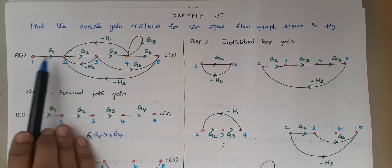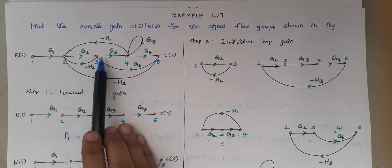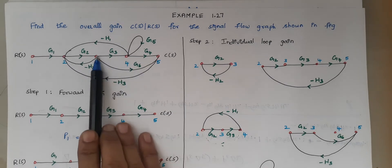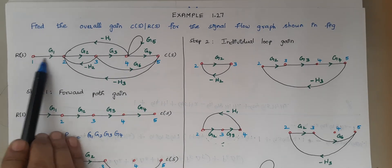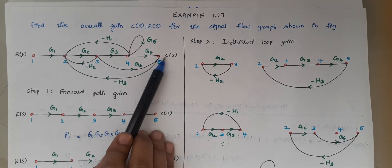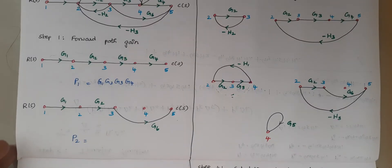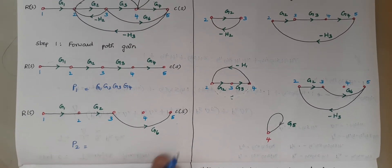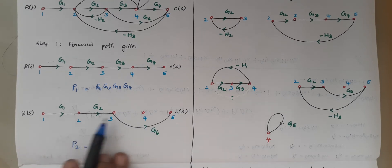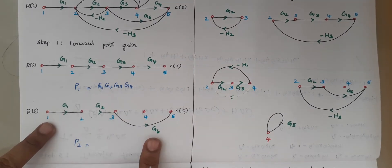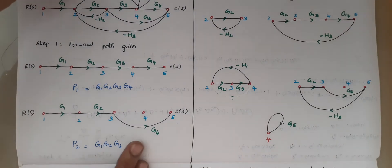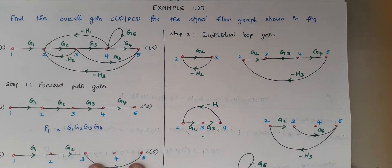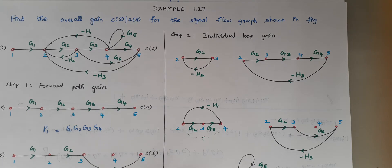The next forward path goes from node 1 to 3 moving forward, and then from 3 to 5 directly via the branch with gain G6. So the path 1 to 2, 2 to 3, and 3 to 5 forms a second forward path. The second forward path gain is G1 × G2 × G6. Apart from these two, there are no more forward paths.